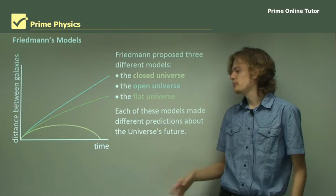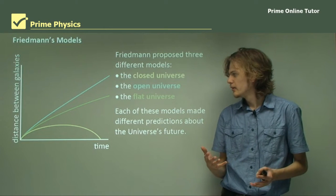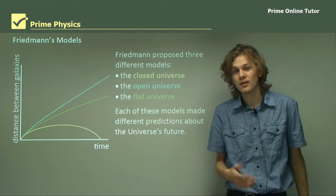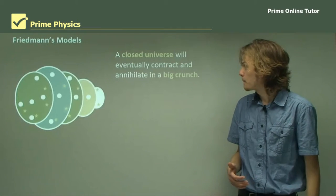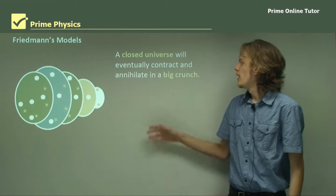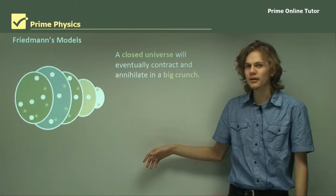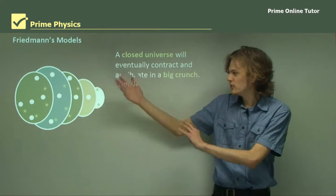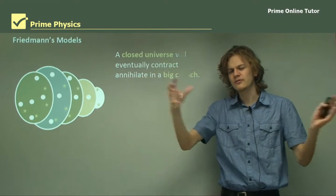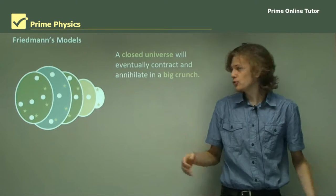Each of these models made different predictions about the universe's future. A closed universe, so remember that's the yellow line that goes up and then back down, will eventually contract and annihilate in a big crunch. In this diagram here, there's our universe as it currently is. It'll keep expanding for a bit, stop and start getting smaller again. And eventually, everything will just pull itself together with gravity and get destroyed. So that's called the big crunch theory.